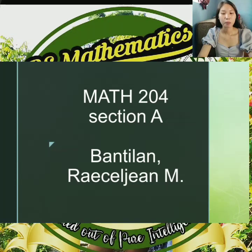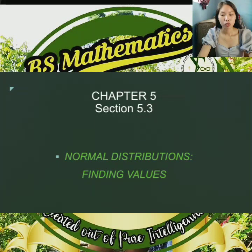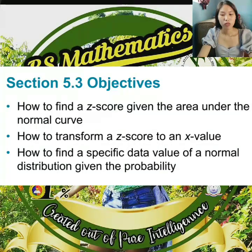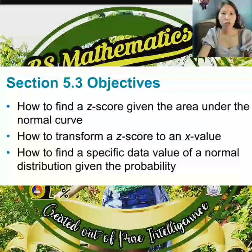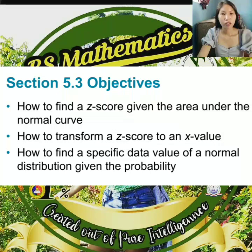This topic is from Chapter 5, Section 5.3, which is all about normal distributions — finding values. In this topic, we are going to find a z-score given the area under the normal curve, transform a z-score to an x-value, and find a specific data value of a normal distribution given the probability.